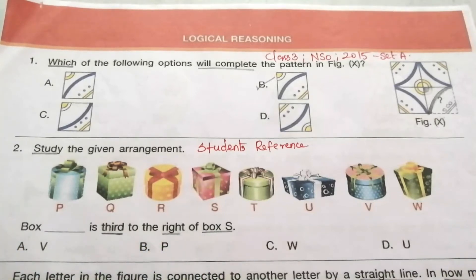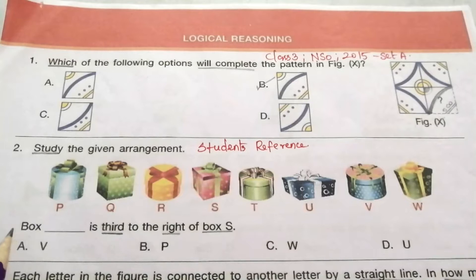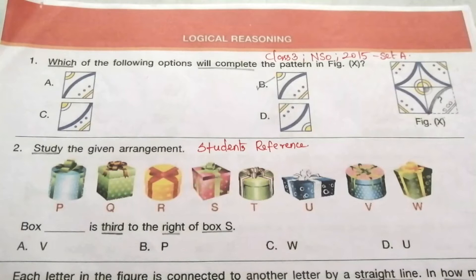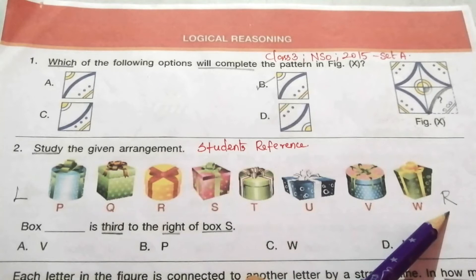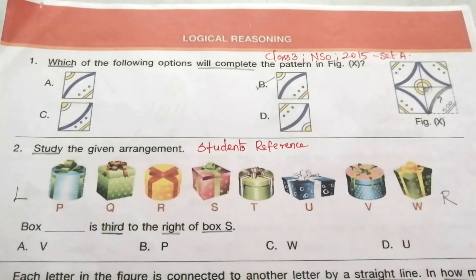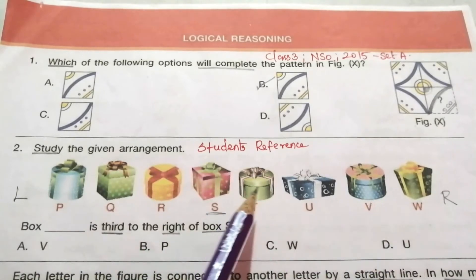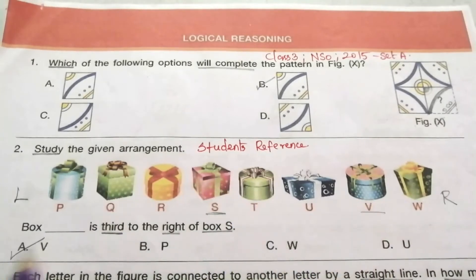Question 2: Study the given arrangement — box dash is third to the right of box yes. Look at the given picture carefully. First we mark right and left sides, then locate box yes. Counting third to the right: first, second, third — our answer is V. So the answer is A, V.